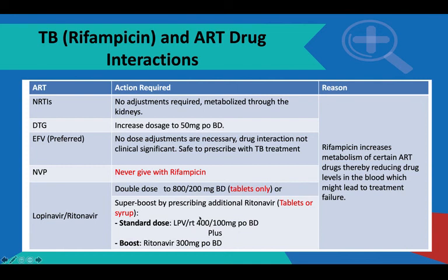Where a child is consuming the syrup or solution, in terms of adults you would give the standard dose. For super boosting, you add additional ritonavir — which is 300 milligrams. In children, it will be the two mils of lopinavir/ritonavir, and usually around 1.5 mils of your ritonavir syrup. For children, we prefer super boosting by prescribing additional ritonavir, but you will use the weight band of that child to determine the right dose.